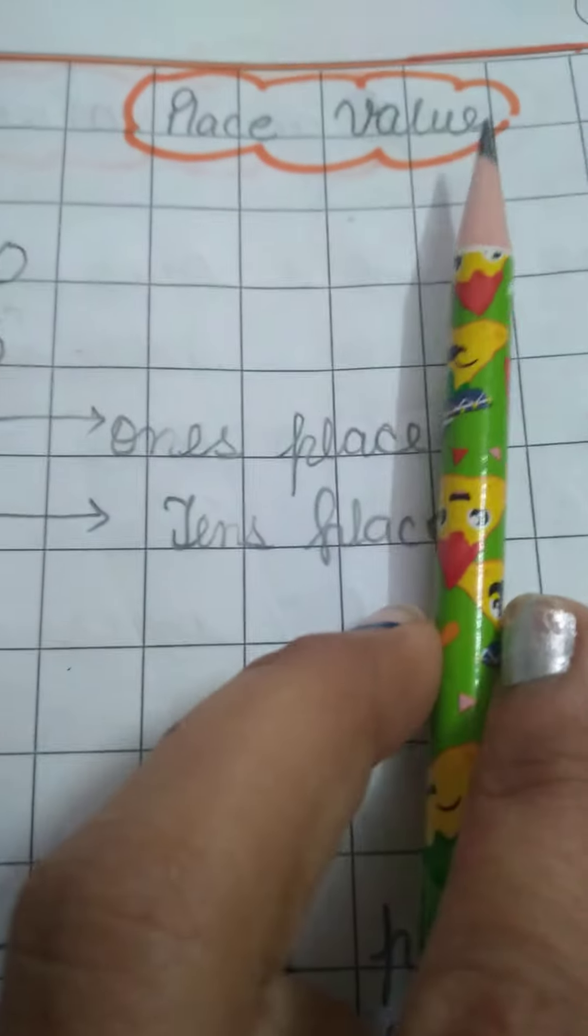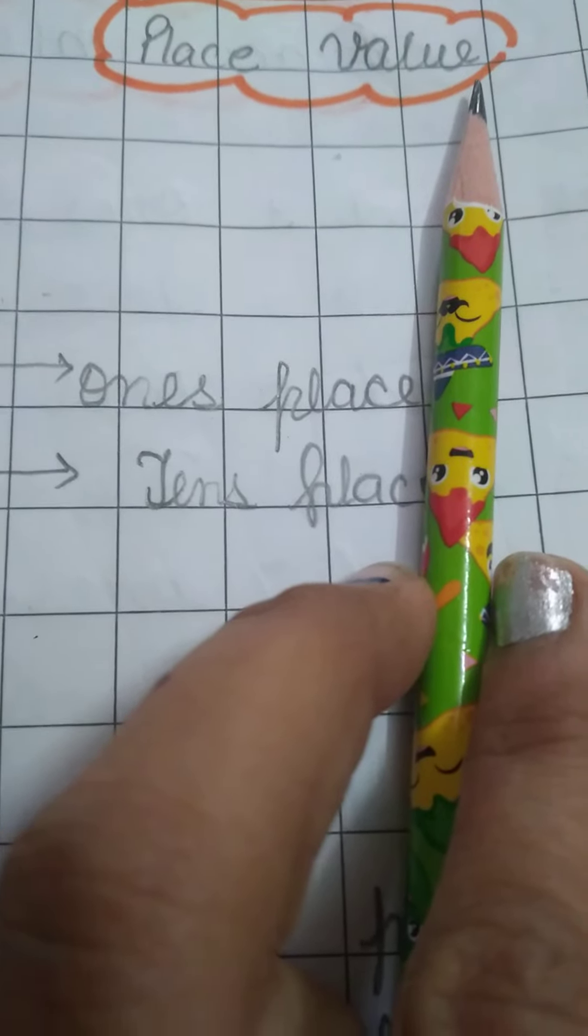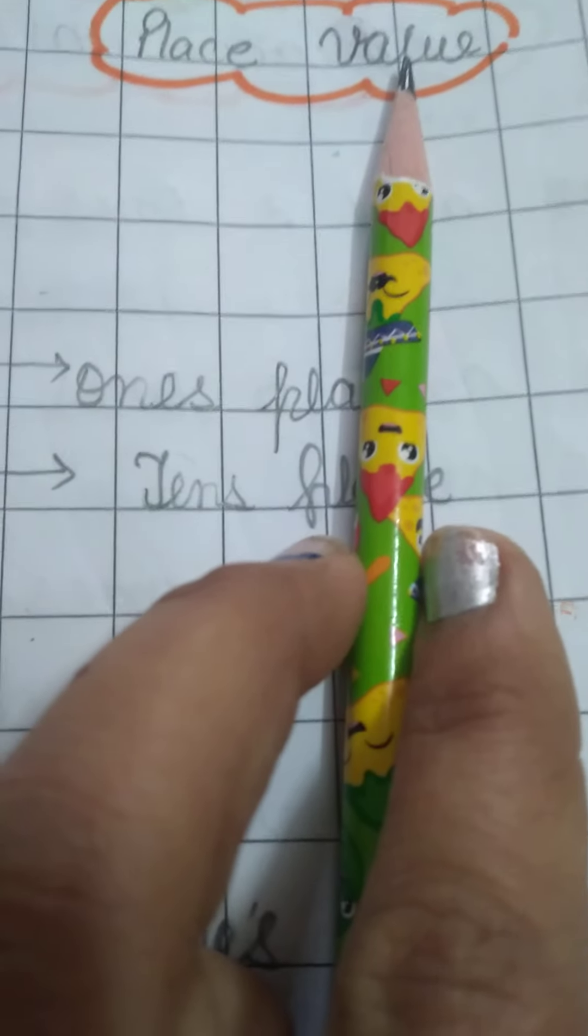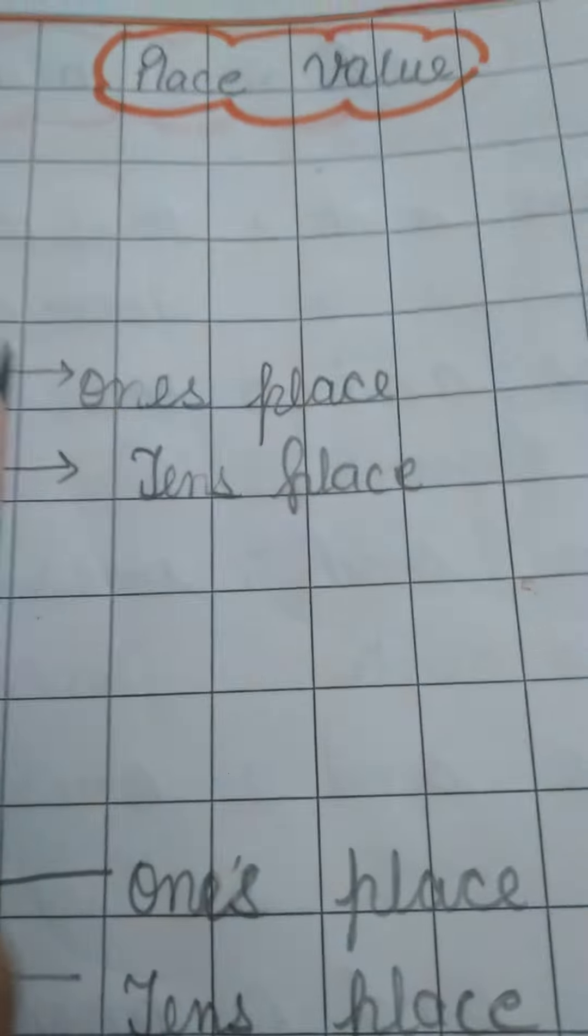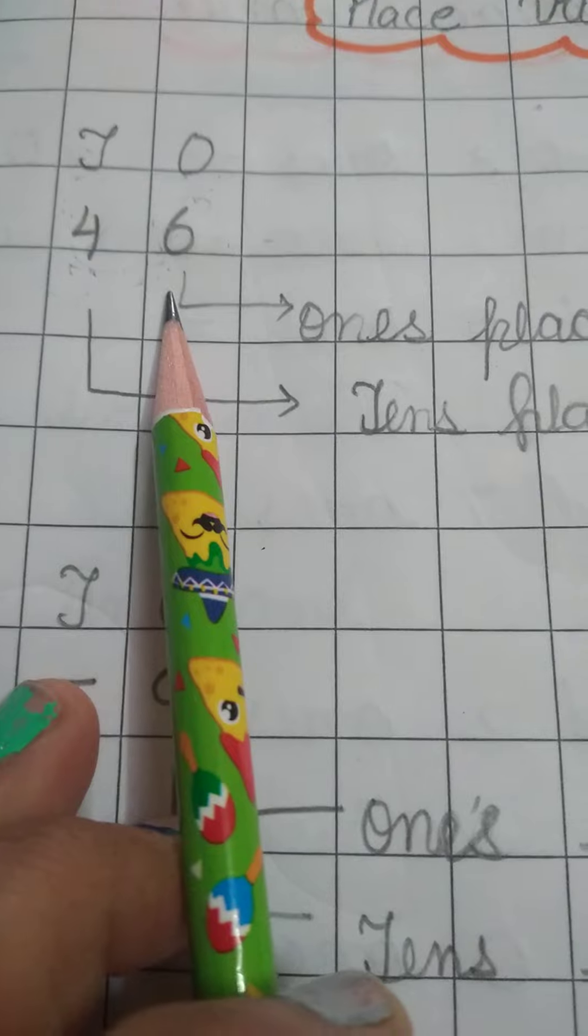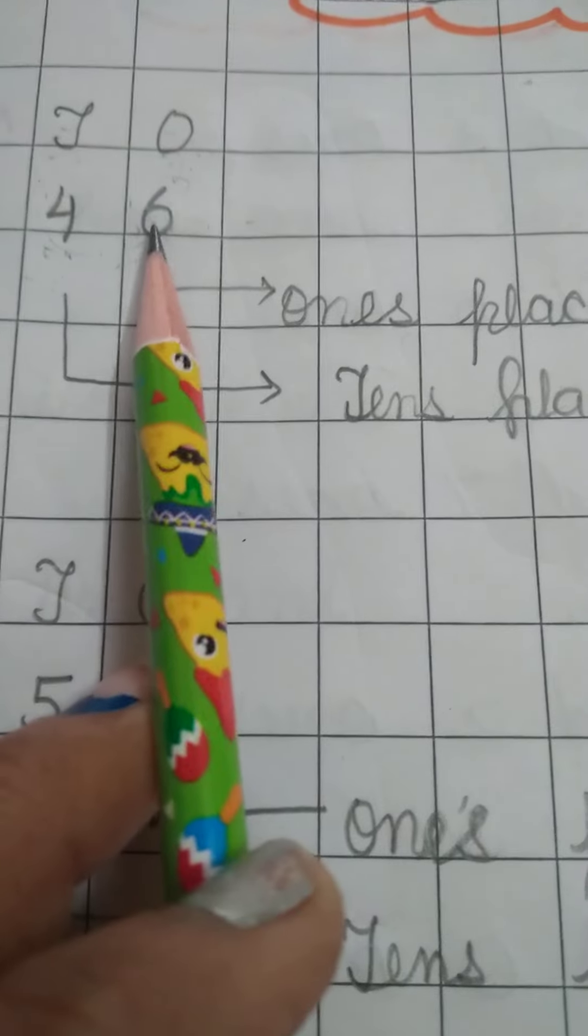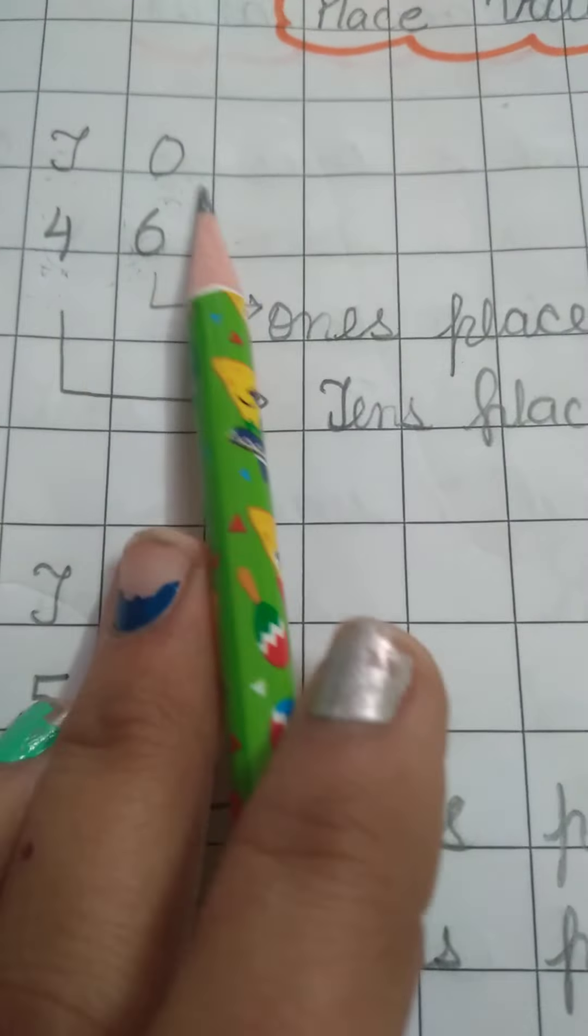We need to know the place value of numbers. You always write numbers below the heading of T-O: tens and ones. If we have one number, we write it below the O for ones.